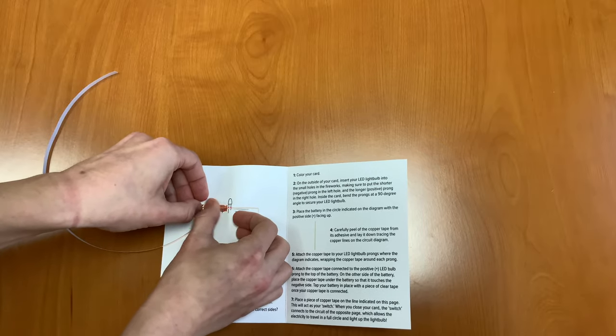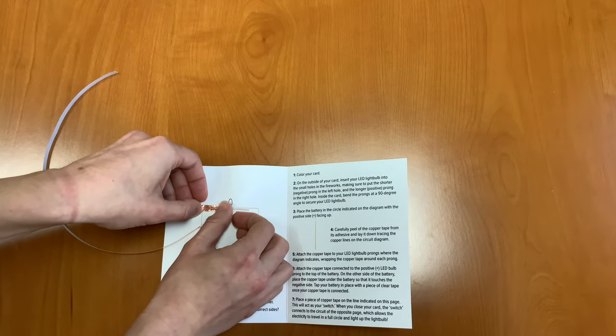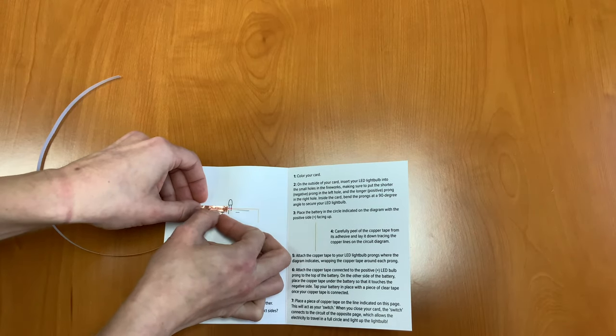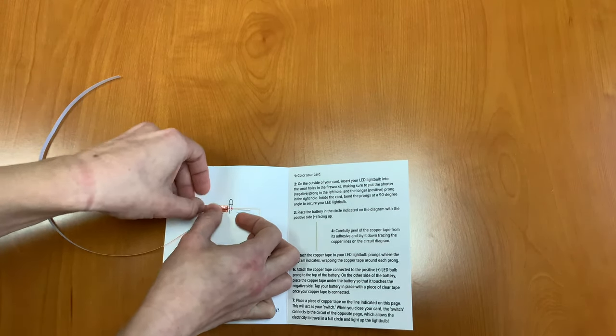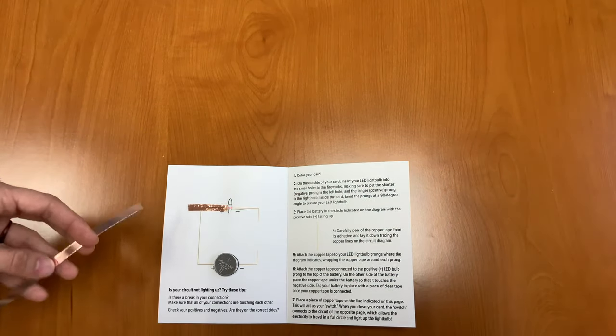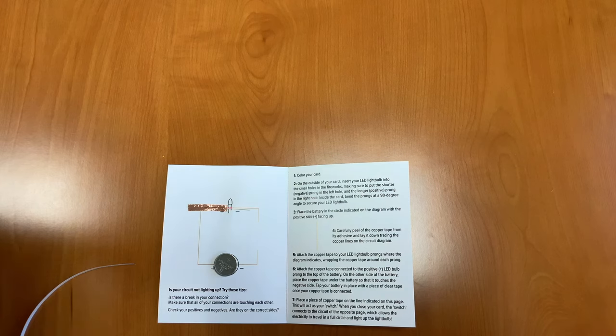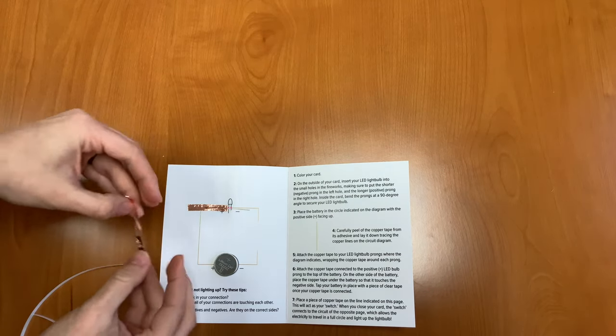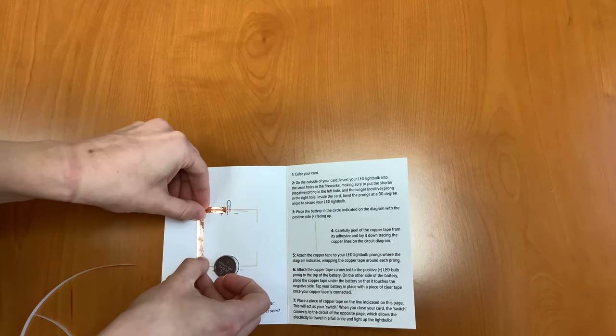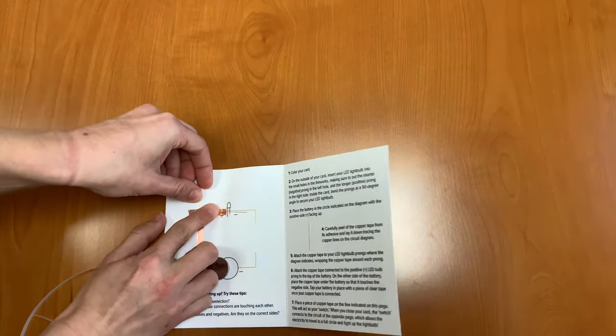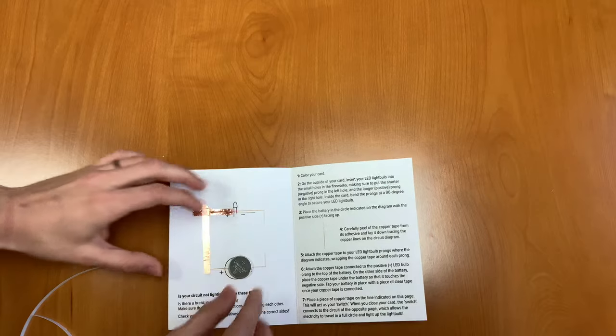So I'm attaching the copper tape to my LED light bulb prongs where the diagram indicates. I'm just wrapping the copper tape around or putting it on top and making sure that it's on those prongs. So it's okay if there's a little bit of overlap. As you can see, as long as all the copper is touching, then that works.